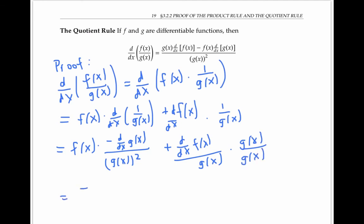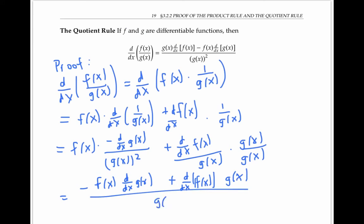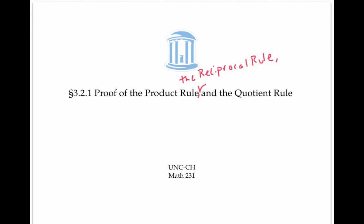Now we get negative f(x) times the derivative of g(x), plus the derivative of f(x) times g(x), divided by g(x) squared. And hopefully this bottom expression is the same as this top expression — and yes, after rearranging the terms, it is. So that's the end of the proof of the quotient rule. This video gave proofs of the product rule, the reciprocal rule, and then the quotient rule.